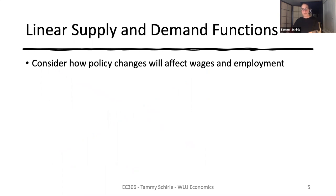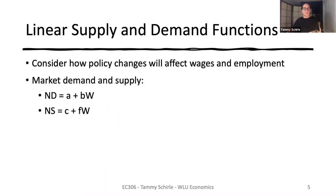This very simple model can be helpful for thinking about simple policy changes. For example, we could map out what the demand and supply functions look like and see how payroll taxes matter. We can use linear functions to characterize supply and demand, noting that B must be something less than zero while F is positive. By setting supply and demand equal to each other, we can solve for an optimal wage rate and employment.